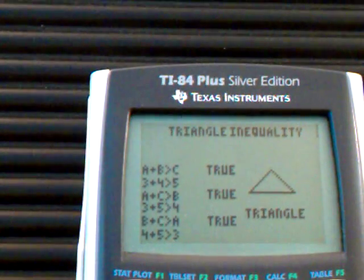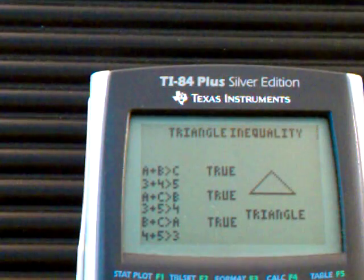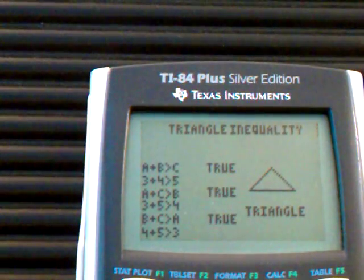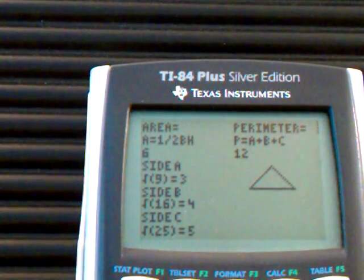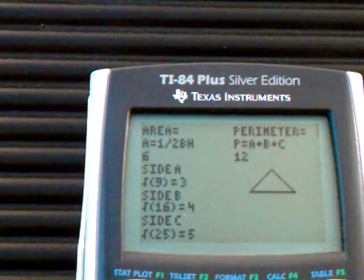It goes through and tests it to make sure it works. It tells me it's a triangle. Once it's a triangle, then we can get this. It's linked to Heron's formula, where it tells me each side gives me the area and the perimeter.